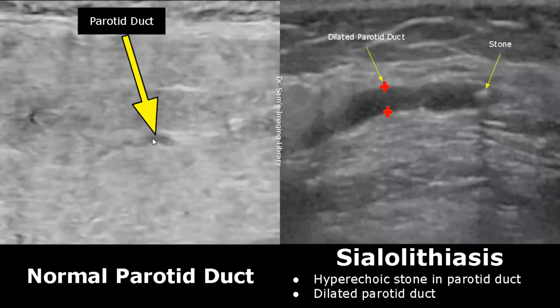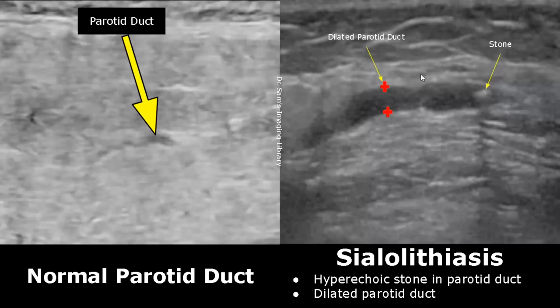Sialolithiasis refers to the presence of stones within the salivary gland ducts. We can see a hypoechoic stone within the parotid duct, which has led to a dilated parotid duct. The stone is also casting a posterior acoustic shadow.